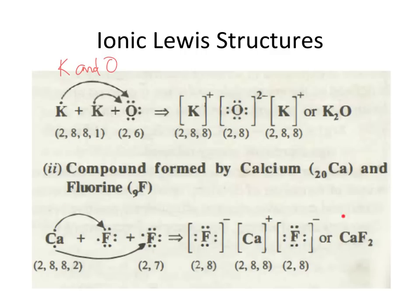The second example involves fluorine, which has seven valence electrons because it's in group seven. Each fluorine needs one electron. Calcium has two to give away, so it gives one to each fluorine, satisfying both octets. Calcium has gone down a level. The only mistake to watch for is the charges: each fluorine gained one electron so it's negative one, and calcium lost two, so its charge should be two plus.